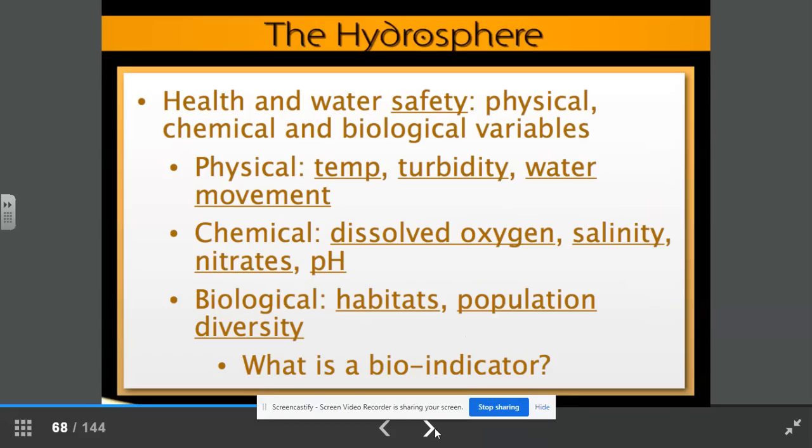The health and water safety are an important part of the hydrosphere. We have physical, chemical and biological variables. Physical includes temperature, turbidity, how cloudy or clear the water is, and the movement of water. Chemical variables include dissolved oxygen levels, salinity levels, nitrates, how many nitrates are present, and the pH level. Biological variables include habitats, population, and diversity.